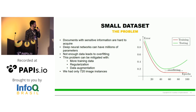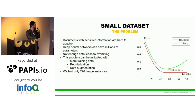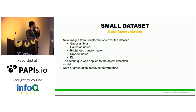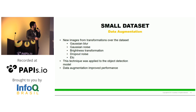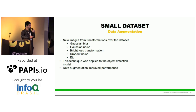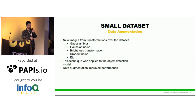There are ways to address this problem: more training data — which was not our case — regularization, which is a usual technique to solve overfitting, and data augmentation, which is what we did. For the first module, the object detection module, we applied some usual data transformations: Gaussian blur, Gaussian noise, brightness transformation, dropout noise, and others. These techniques were applied to the object detection module.